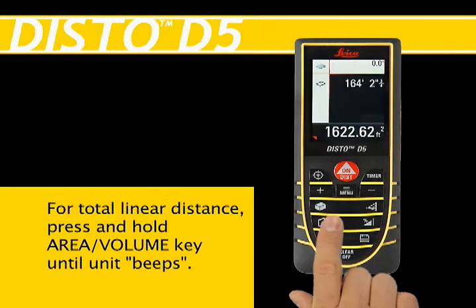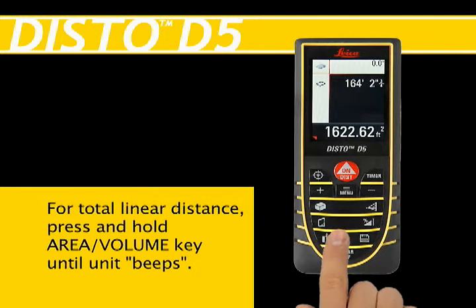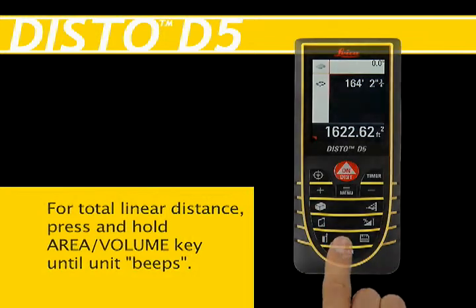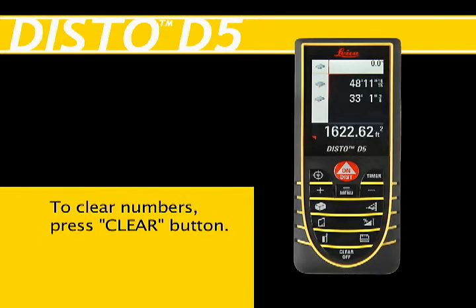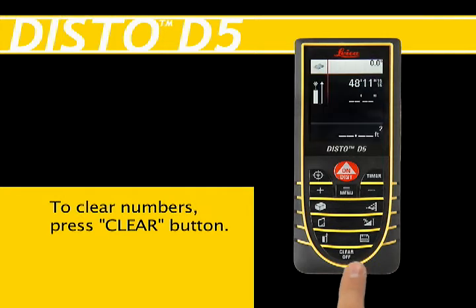Total linear distance will appear in upper right hand corner of screen. To clear away numbers on screen and start again, press clear button at bottom of keypad.